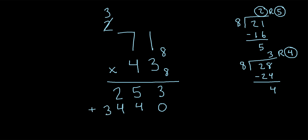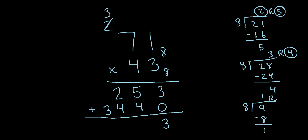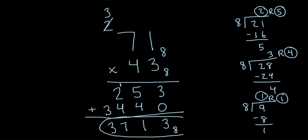Now we add these values. Three plus zero is 3. Five plus 4 is 9. Since we get a number that is 8 or greater, we ask how many eights go into 9 — just 1. One times 8 is 8, so 9 minus 8 is 1, giving a remainder of 1. The remainder goes here, and the 1 carries to the next column. In that column, 1 plus 2 plus 4 is 7. The last column is just 3. So our final answer is 3713 in octal.